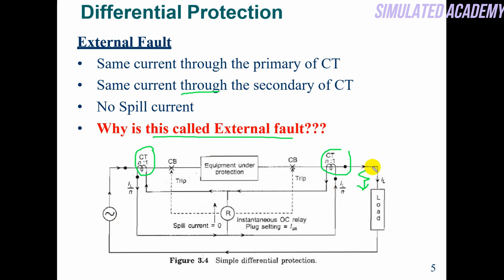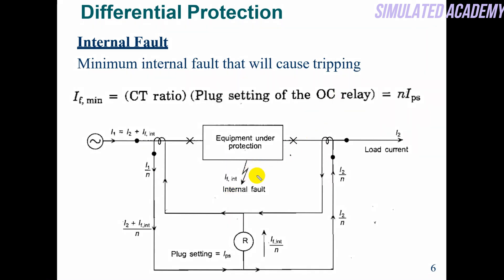If a fault occurs and a large amount of current flows, that current will pass through this CT and similarly pass through this CT as well. The spill current will be zero here, so this equipment will be under protection — relay will not operate. Now if an internal fault occurs, the current passing through CT1 does not pass through CT2 because it is grounded. So that current passes through the spill coil, i.e., the relay operates. Minimum internal fault causes tripping.